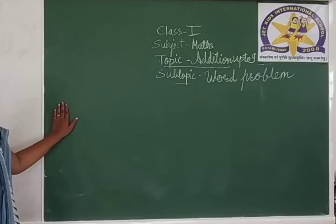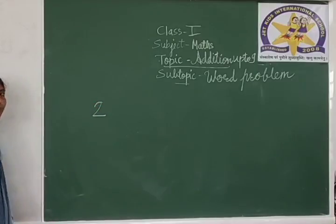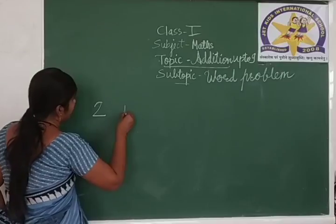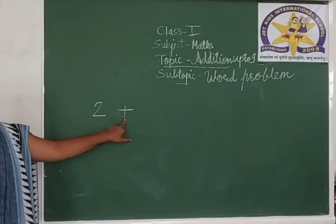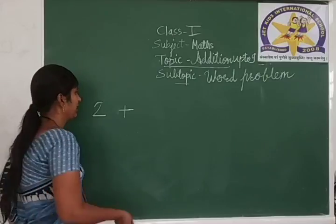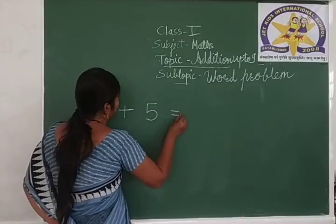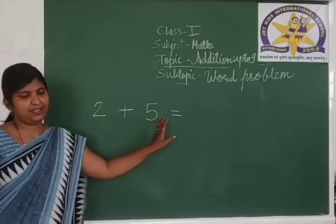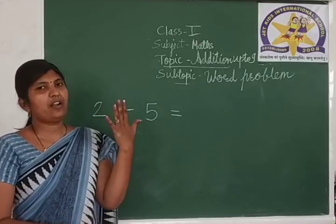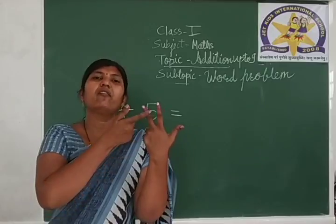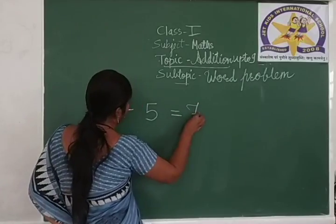Write down first: how many frogs were there? There were two frogs. Five more frogs joined them, so the addition symbol is used — plus five. Now 2 plus 5: 2 in your mind, 5 on your finger. Count after 2: 3, 4, 5, 6 and 7. We got the answer 7.